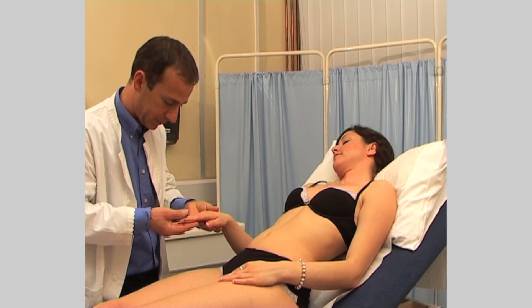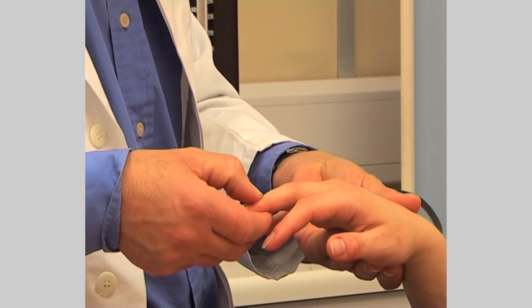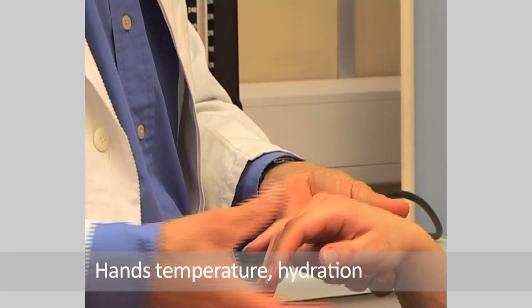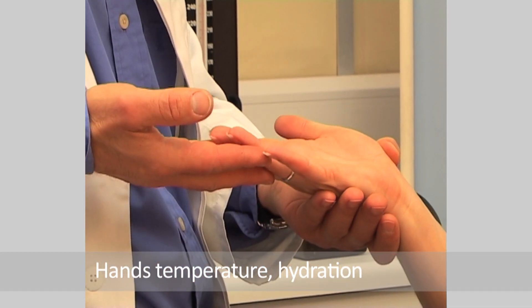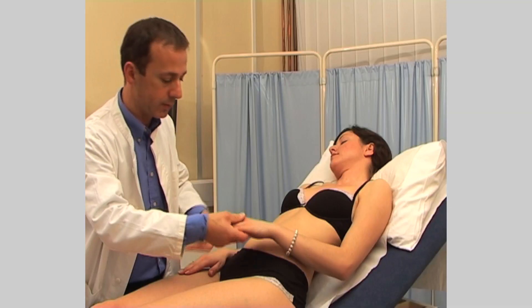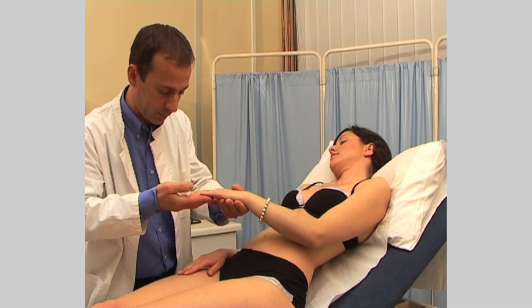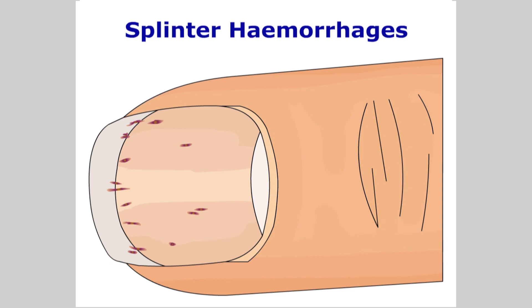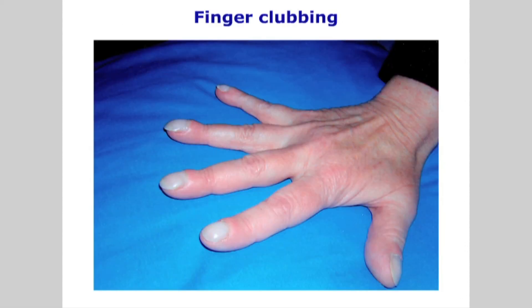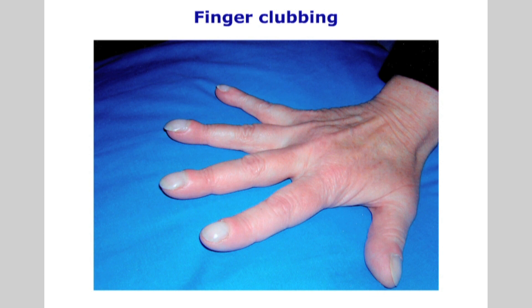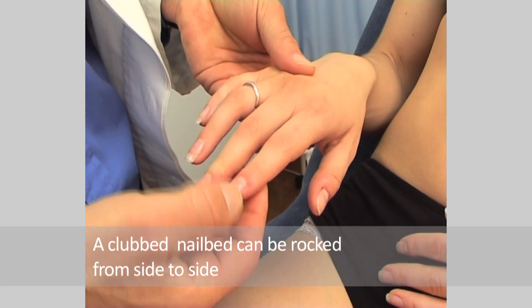Moving to the inspection of the hands: when you shook hands, did you notice their temperature and were they sweaty? Examine the nails for clubbing and splinter hemorrhages. Clubbing may be caused by bacterial endocarditis and cyanotic congenital heart disease. Clubbing is also associated with pathologies of the lungs, the liver, and inflammatory bowel disease.